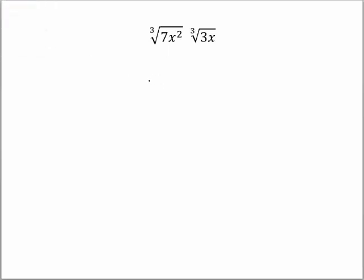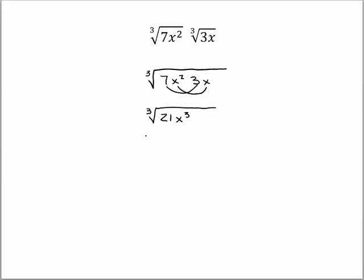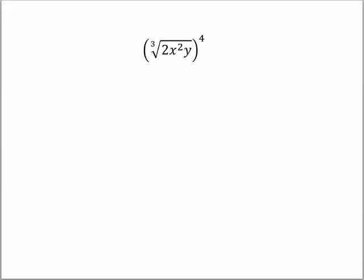Here's another one. This time we keep the 3rd root — same root — and we've got 7x squared times 3x. All of those are multiplied together under the radical. We can rewrite this combining the x's: 7 times 3 is 21, and x squared times x is x to the 3rd. Now what can we do with this? We can bring out the x, since x to the 3rd under a cube root comes out. So our final answer is x times the 3rd root of 21.